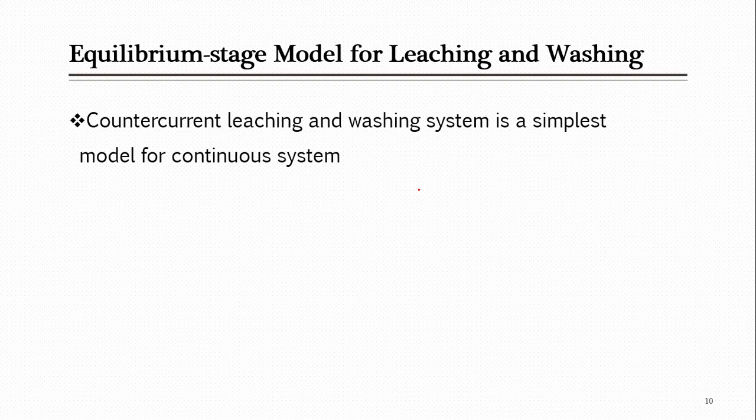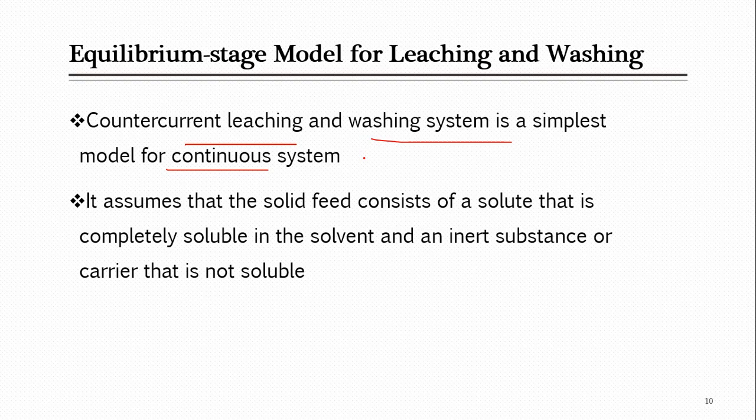Now we move to the equilibrium stage model for leaching and washing — the last part of this lecture. As discussed earlier, most of the time there is one leaching stage followed by washing stages. This model, sometimes called the counter-current washing method, is the simplest model for describing continuous leaching and washing systems and is most widely used for design and calculation.